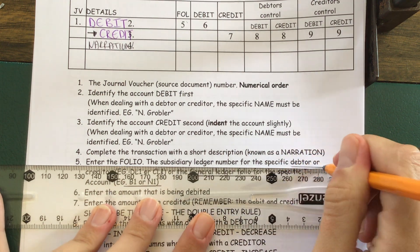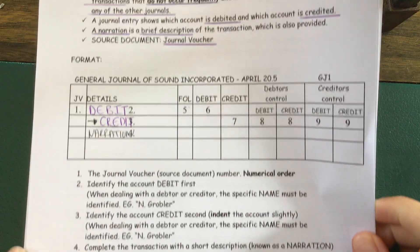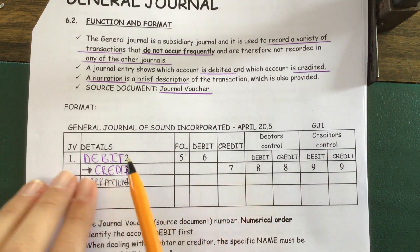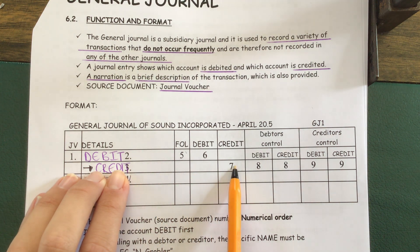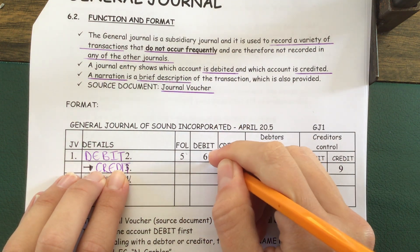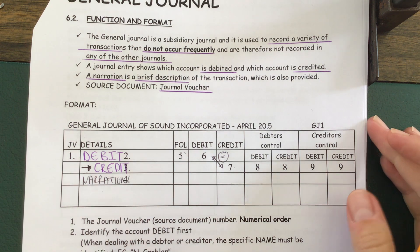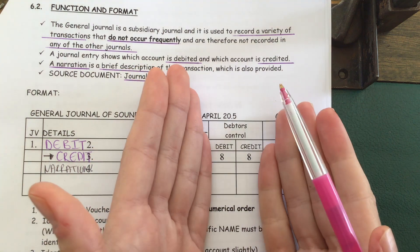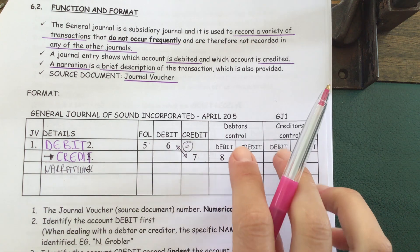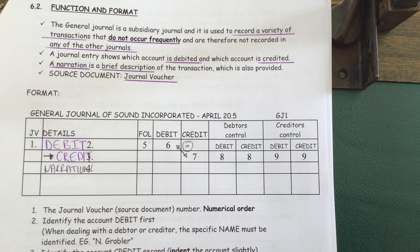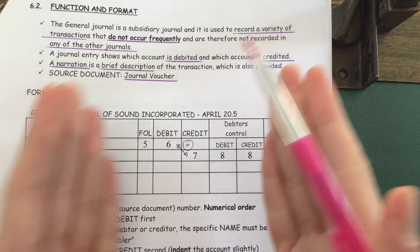Sometimes we even have to put the debtors or creditors ledger folio, so it's very important not to leave that out. Then we have the debit and credit columns — for the debit account you put the amount on the debit side and for the credit account on the credit side. Remember these two have to be the same because of the double entry rule. Specifically, we also have a debtors control and a creditors control column, which is very important. It reminds me to go to the debtor's ledger as well — we can't forget. Whenever you have a debtor or creditor's account, it becomes important to use these columns.